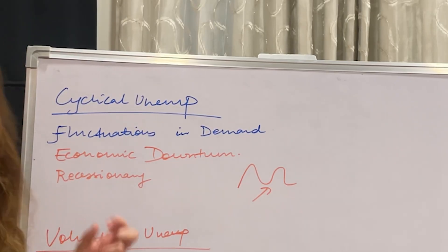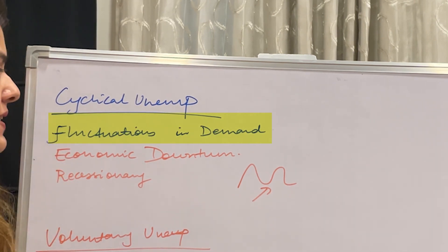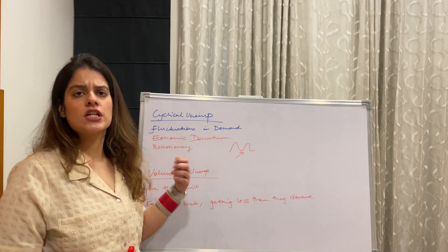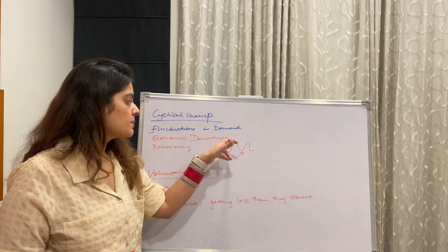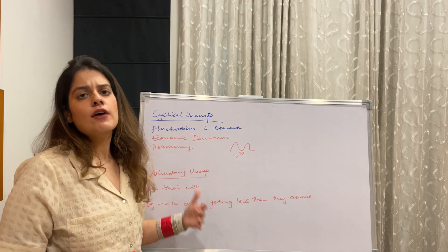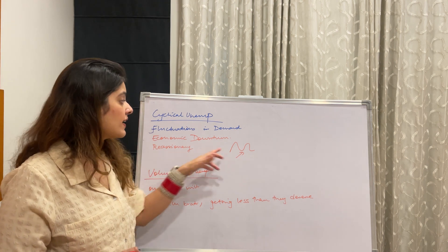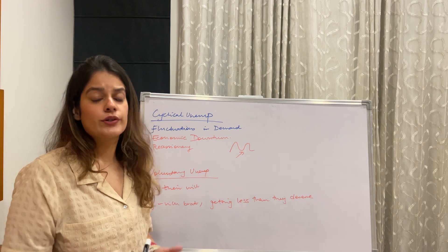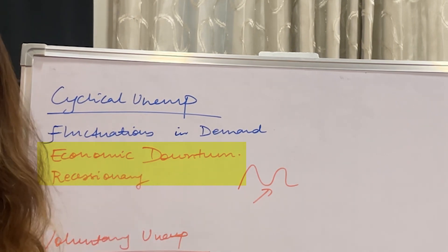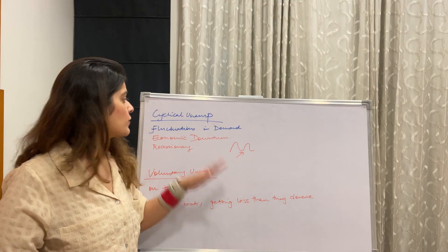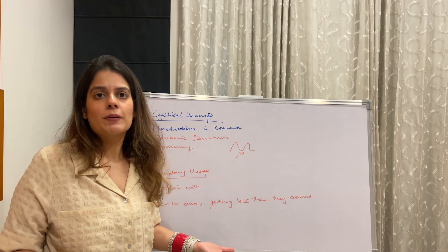Next is cyclical unemployment, which happens due to fluctuations in the business cycle. We have peaks and lowest points in the business cycle, and when the economy is at a downturn, many economic downturns occur and people lose their jobs. During a recessionary period, when people are losing their jobs due to economic downturn, that is known as cyclical unemployment.